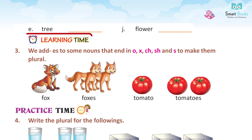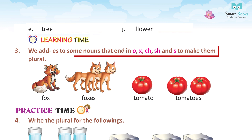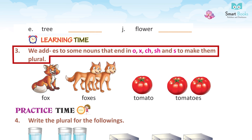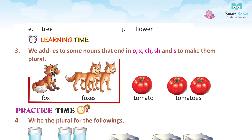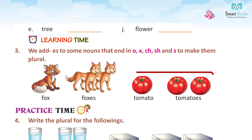J. Flower — flowers. Learning Time 3. We add ES to some nouns that end in O, X, CH, SH, and S to make them plural. Fox — boxes. Tomatoes.